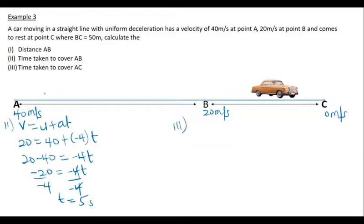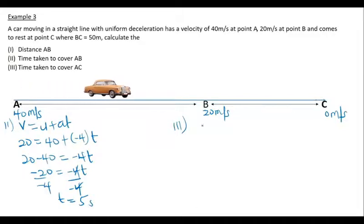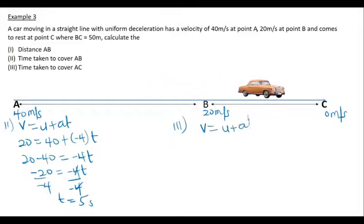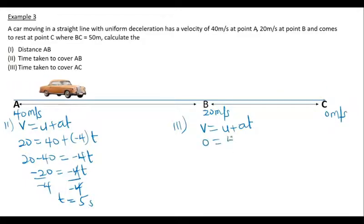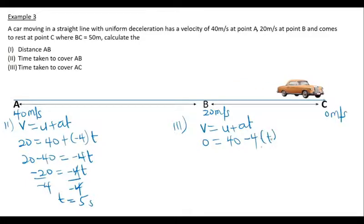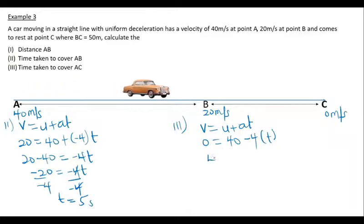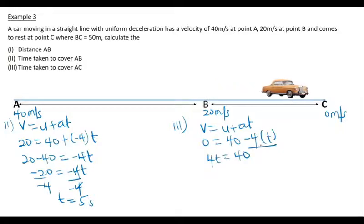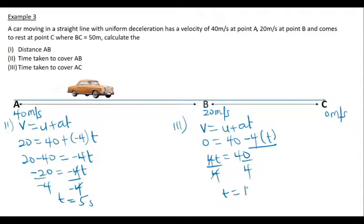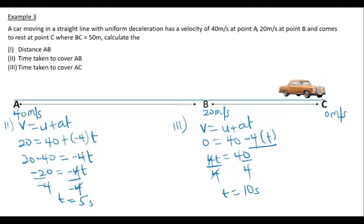For part (iii), the time taken from A to C: using V = U + aT, the final velocity at C is 0, the initial velocity at A is 40, and deceleration is −4. So 0 = 40 + (−4)T, which gives 40 = 4T. Dividing both sides by 4, T = 10 seconds. It takes 10 seconds for the car to travel from point A to point C.